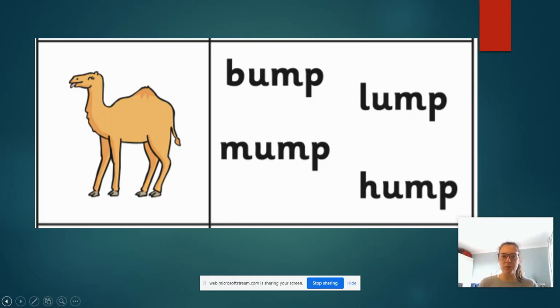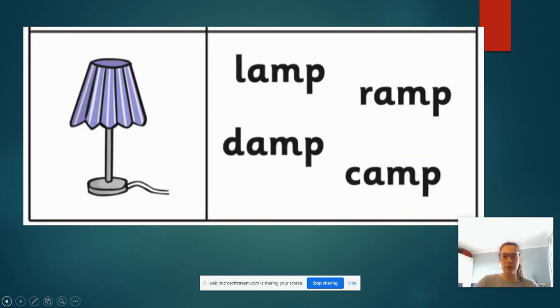Right. If you've read all those words, let's have a go together. So we've got b-u-m-p, bump. We've got l-u-m-p, lump. We've got m-u-m-p, mump. And we've got h-u-m-p, hump. Now, I think the camel has a hump. So well done if you got that correct.